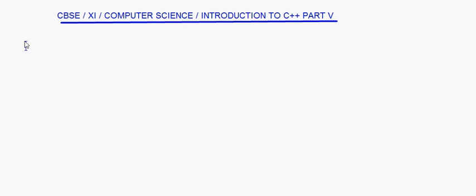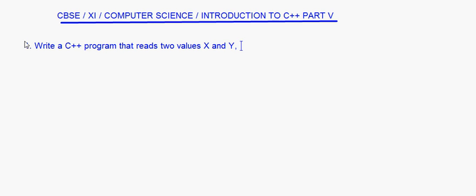In this session, let's take up two small programs and see how to write those programs and how they actually work. The first one is: write a C++ program that reads two values X and Y, exchanges its contents, and prints the output — prints both the numbers. This is basically a program which is going to do swapping or interchanging or exchanging of two values.